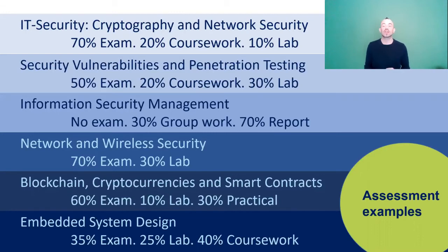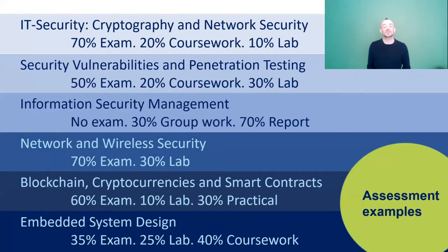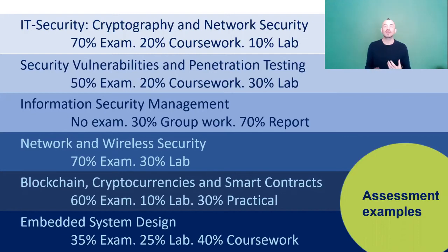In blockchain, cryptocurrencies and smart contracts, the assessment is 60% from exam, 10% from lab and 30% from practical. Then embedded systems design — this module is assessed 25% on the exam, 25% on your lab work and 40% from coursework. So you can see that there's a great deal of variety in the way that the different modules on the course are assessed.